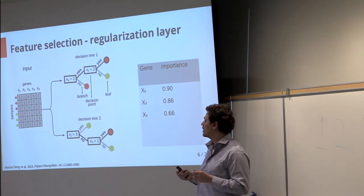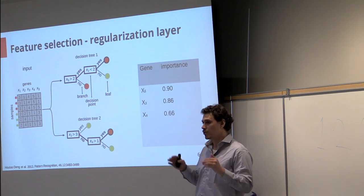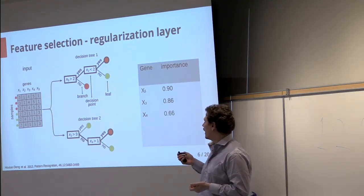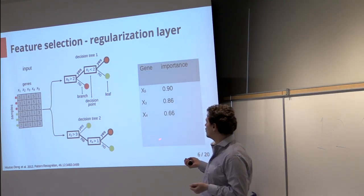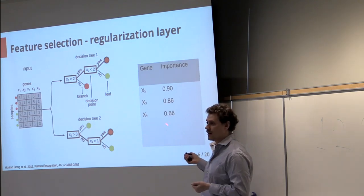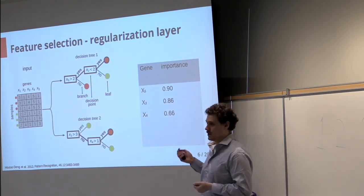And this implements a memory for the random forest and it allows us to reduce the number of genes that are selected while we're building the tree.